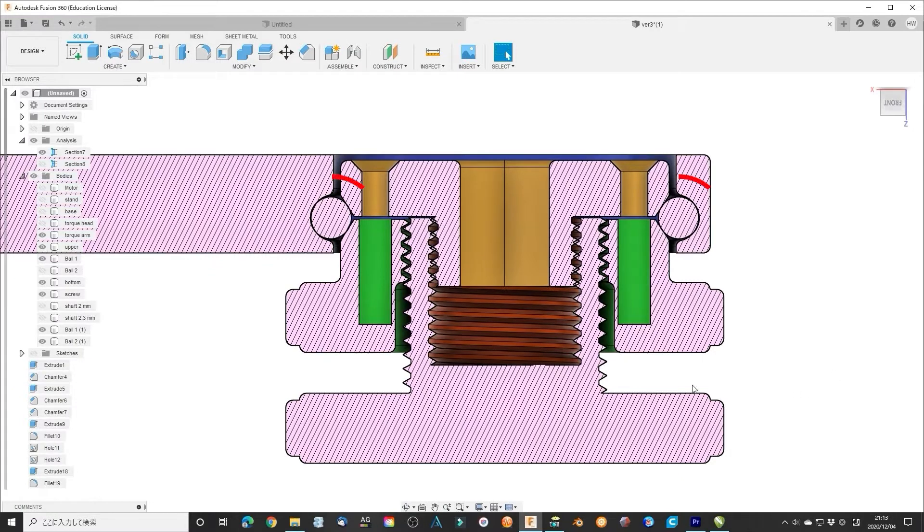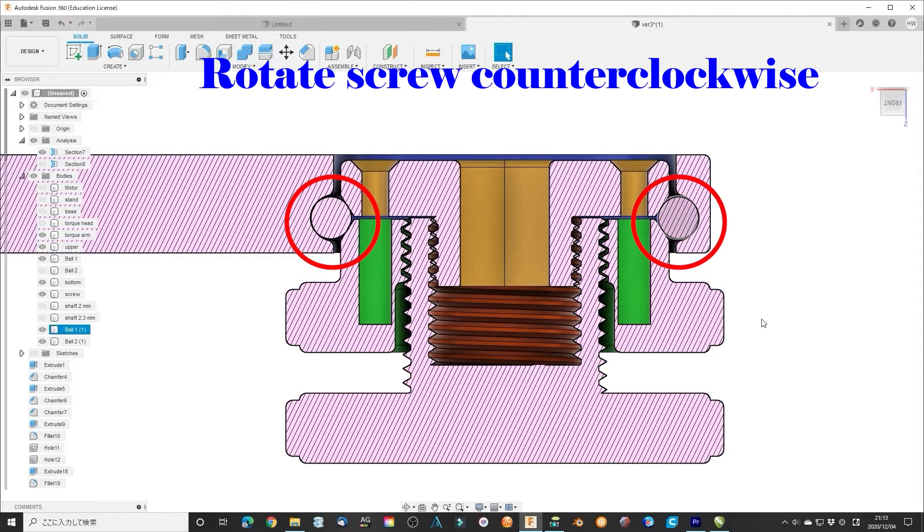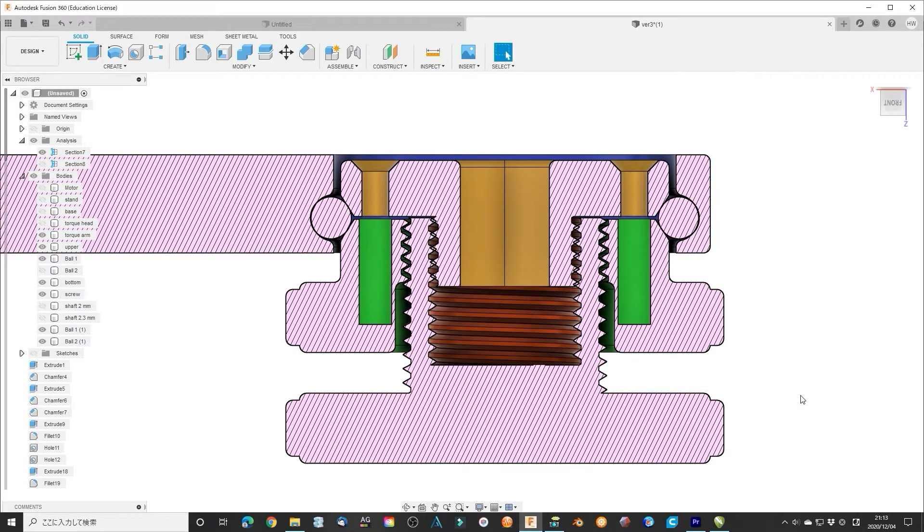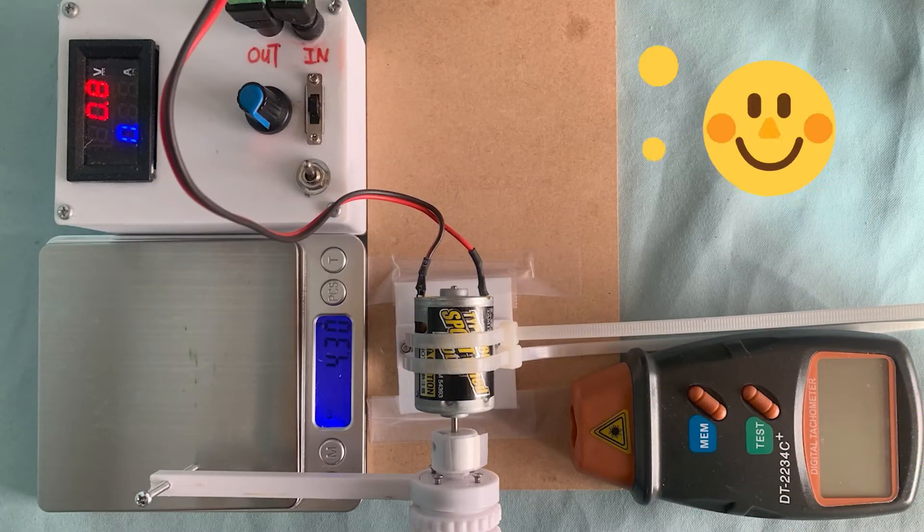When you rotate the screw very hard, the center part will be fixed, which you can measure the stall torque as well. I suppose this is the simplest dynamometer in the world.